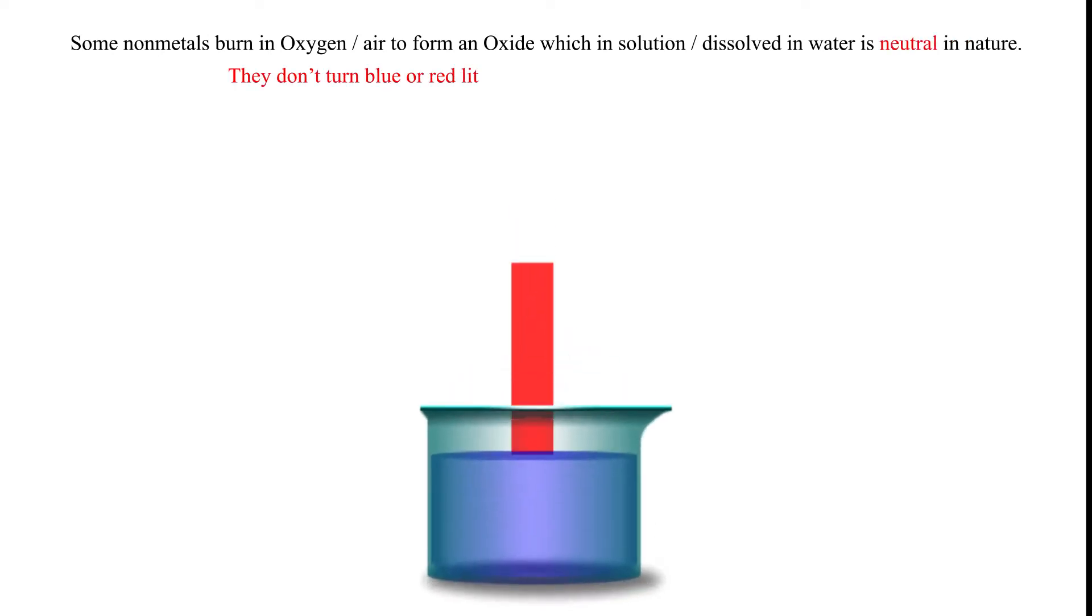Some non-metals burn in oxygen or air to form an oxide which, in solution or dissolved in water, is neutral in nature. They don't turn blue or red litmus. For example, carbon dioxide.